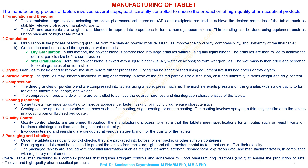Coating (optional). Some tablets may undergo coating to improve appearance, taste masking, or modify drug release characteristics. Coating can be applied using various methods such as film coating, sugar coating, or enteric coating. Film coating involves spraying a thin polymer film onto the tablets in a coating pan or fluidized bed coater.